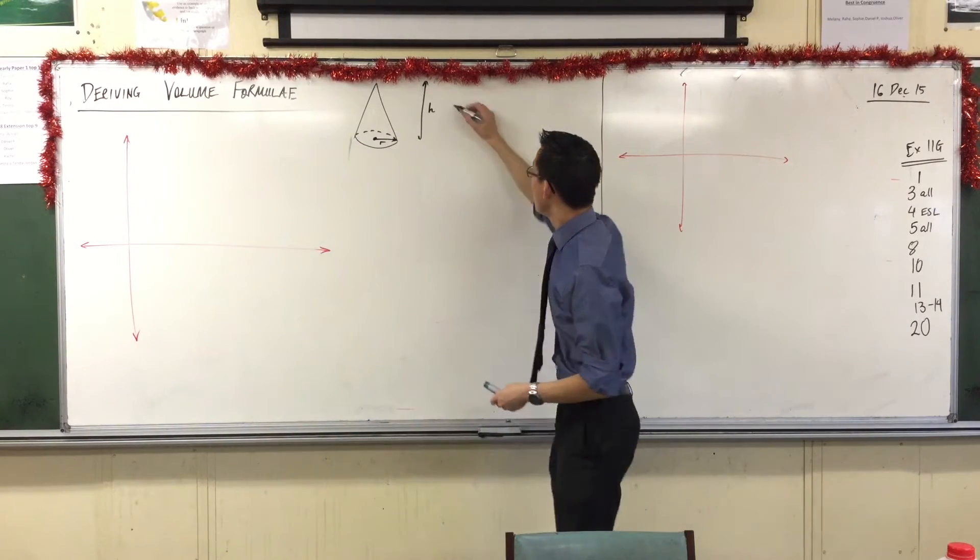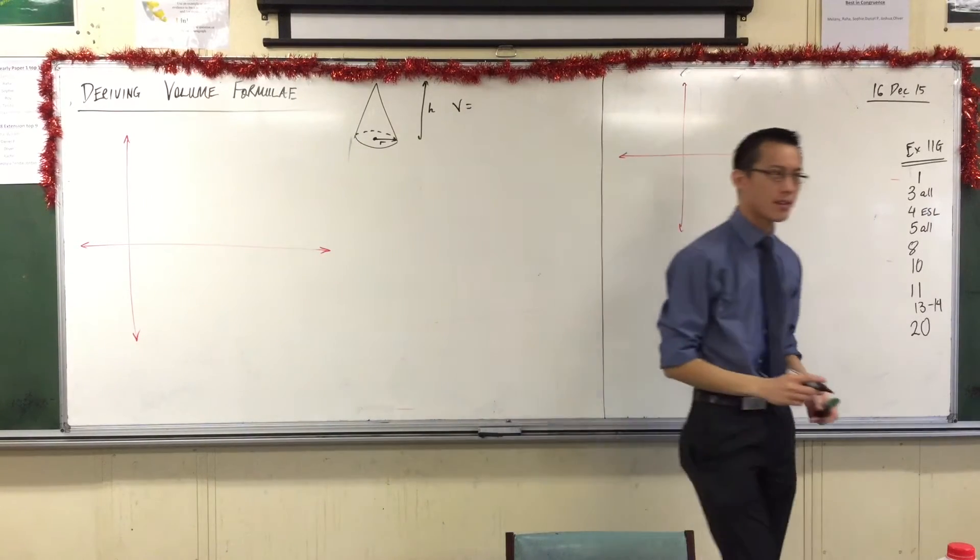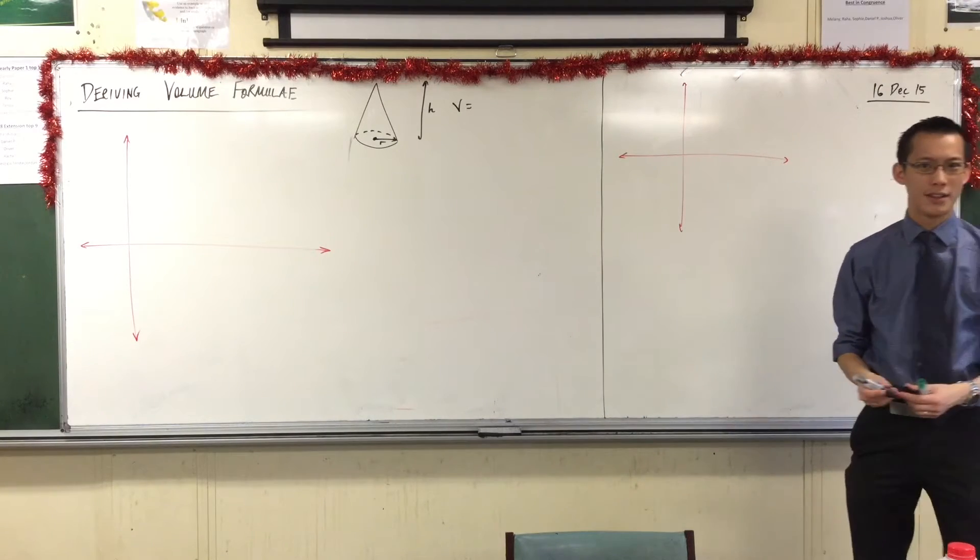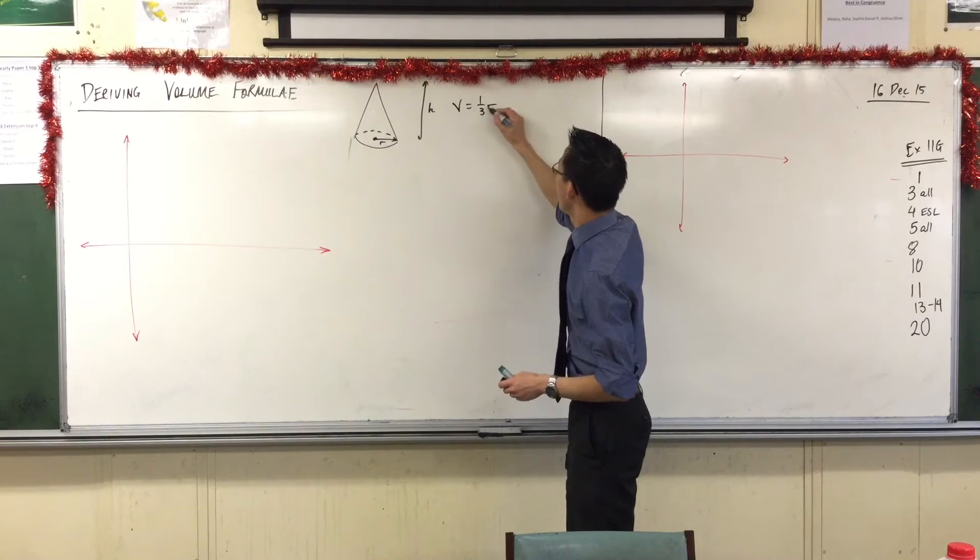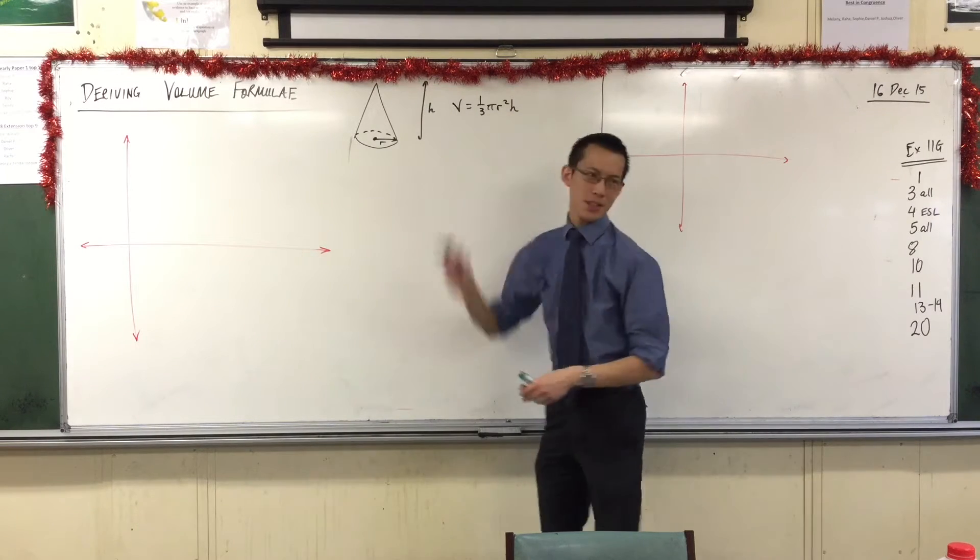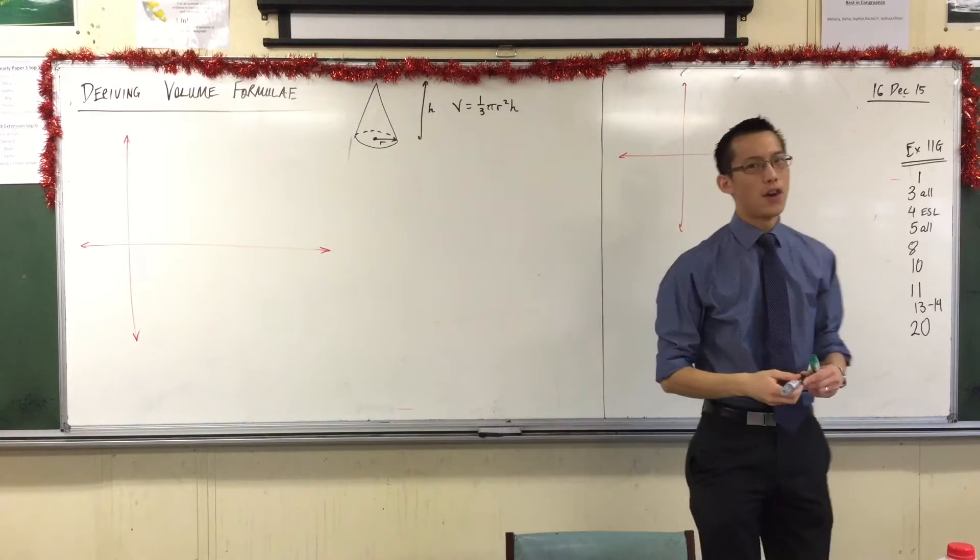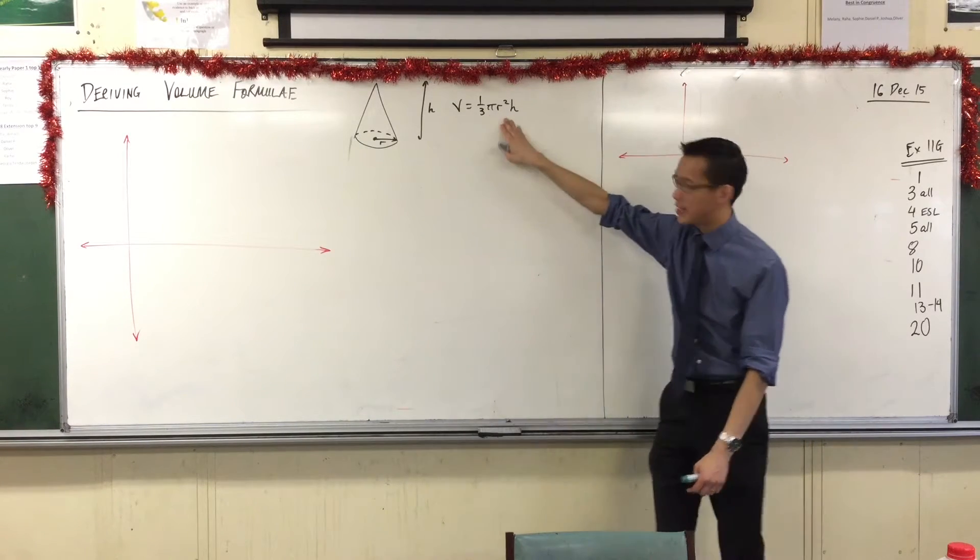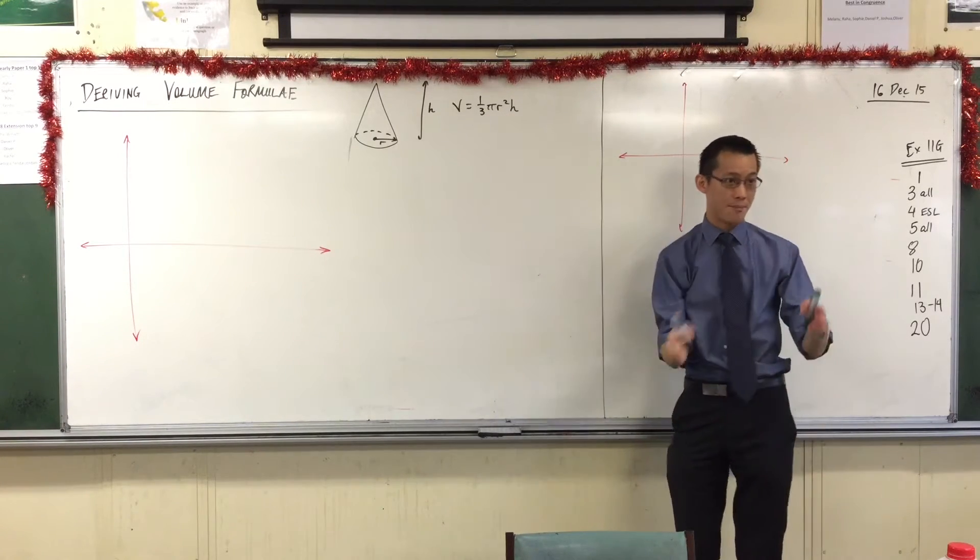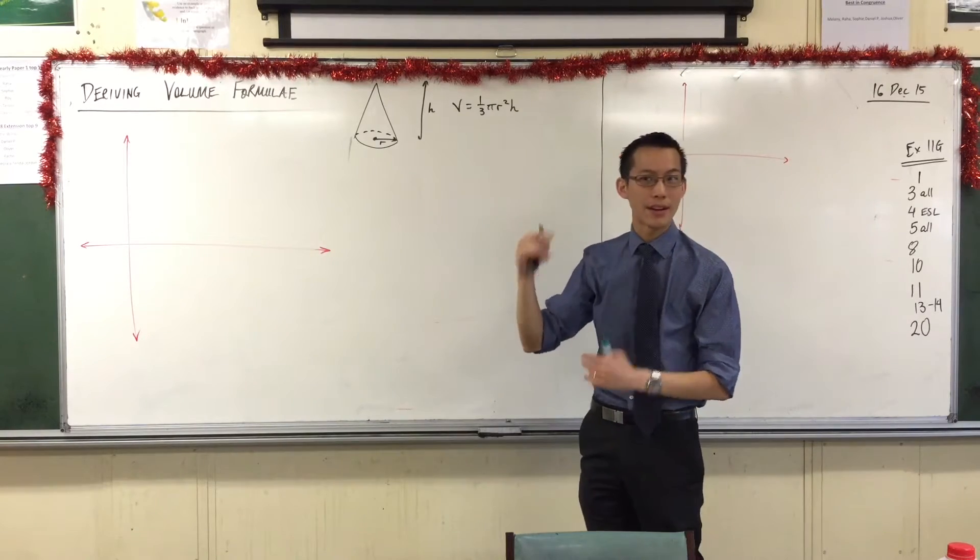Once you have these two, you get a formula which is very closely related to the volume of the cylinder. One third pi r squared h. Very good. So interestingly, this always puzzled me, the volume of a cone is exactly a third the volume of the cylinder with the same dimensions, the same base and the same height.